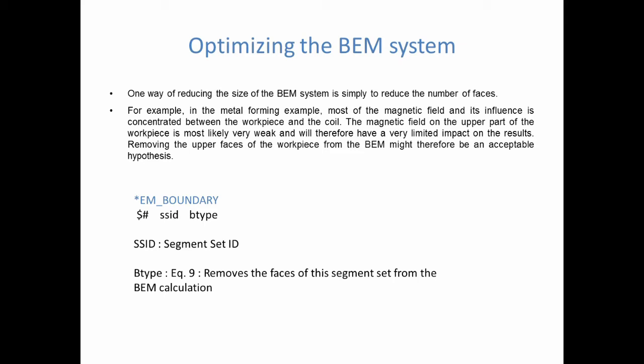The keyword is called EM_BOUNDARY. The user specifies the segment set ID and the boundary type, setting Btype to 9, which means remove those faces from the BEM. As a side note, 9 is now the only Btype possible — in the past there were other options, but they were all rendered obsolete. In summary, the first way to reduce the size of the BEM system is to remove faces that have weak or no contribution.